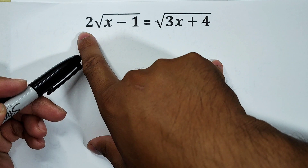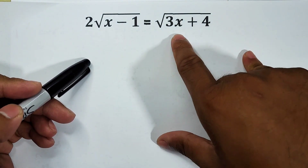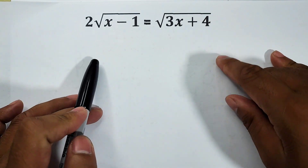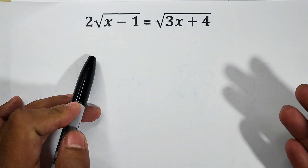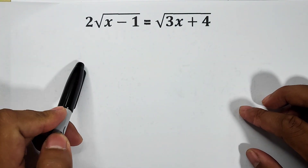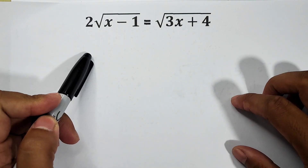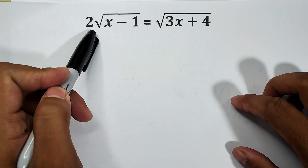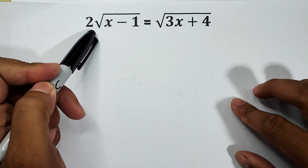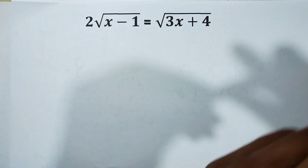So we have here: 2 square root of (x minus 1) is equal to the square root of (3x plus 4). As you can see, both sides of the equation have a radical sign. But what makes this different compared to the previous ones we did is that we have a coefficient outside the radical sign.